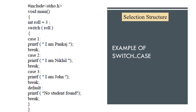Next, using switch-case to check the value of roll. The value of roll is 3, so switch on roll, then go to case 3. The output is 'I am John'.